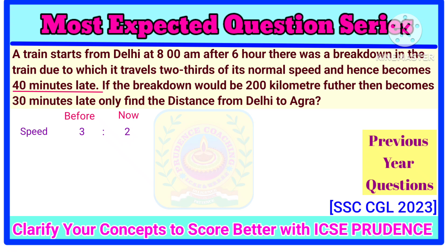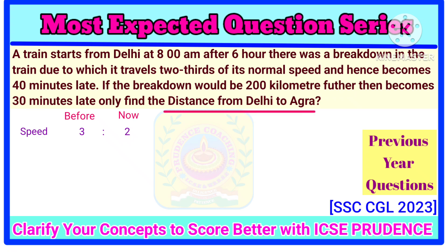That means due to this breakdown it is 40 minutes late. Now it is said if the breakdown had occurred 200 km further — that means after travelling 200 km more — then it would be only 30 minutes late. So in that case it would be late by just 30 minutes. Find the distance from Delhi to Agra.